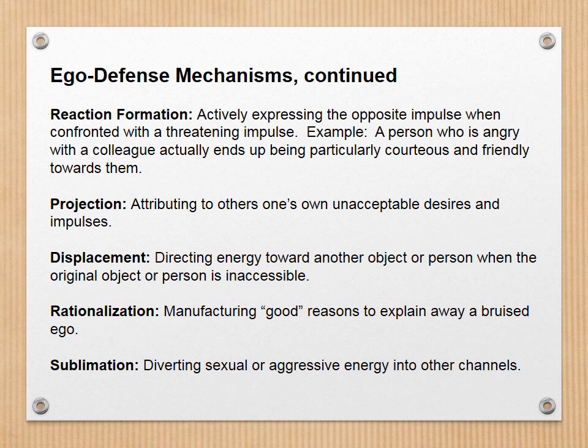Reaction formation is actively expressing the opposite impulse when confronted with a threatening impulse. For example, a person who is angry with a colleague ends up being particularly courteous and friendly toward them — you're so mad at them and don't want them to know, so you're overly nice instead. Projection is attributing to others one's own unacceptable desires and impulses — for example, if someone calls you mean and you respond, "No, you're the mean one."